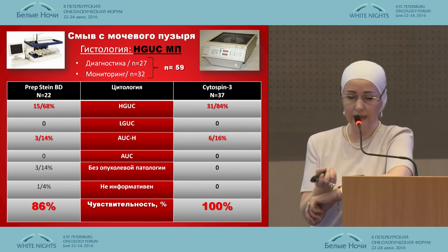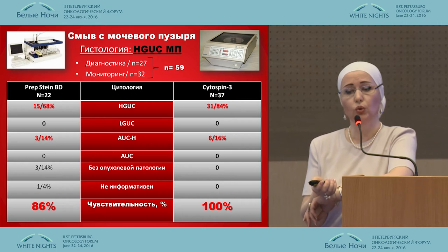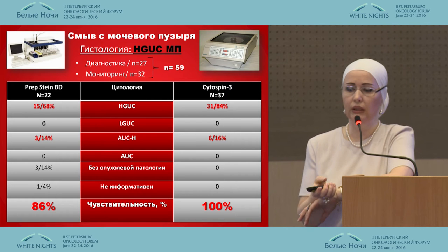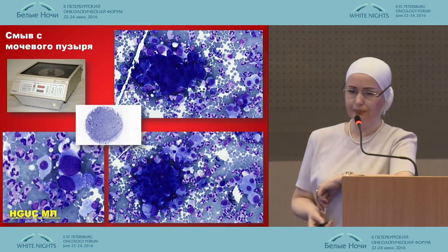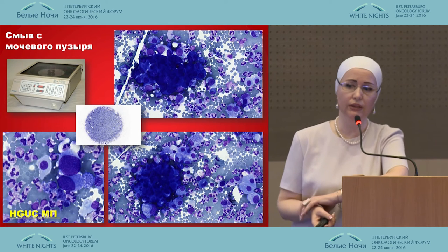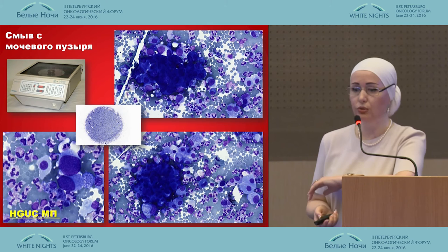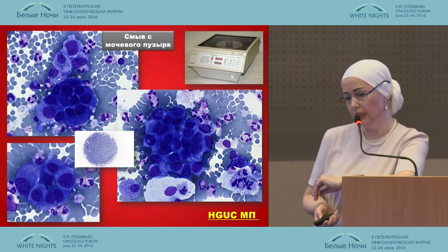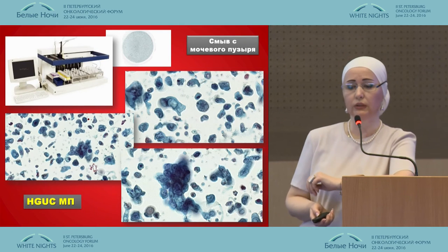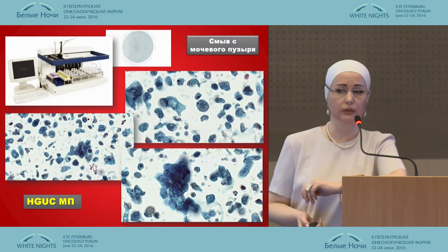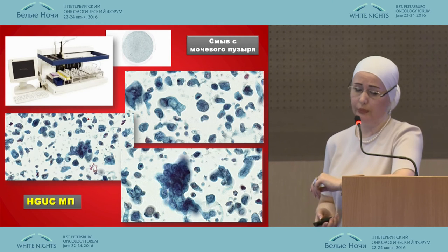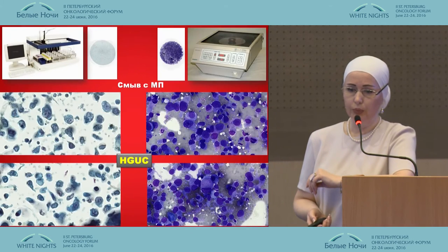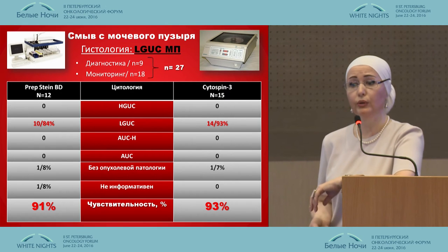Here are the results, based on histologic diagnosis with high-grade carcinoma. When we use the Prepstain system, sensitivity is 86%. When we use Cytospin, the sensitivity is 100%. This is a swab from the bladder. We can see the morphology — how the cells are localized, the cytoplasm is visible. Prepstain prepares and colors the microslide against Papanicolaou staining, and it is very visible.